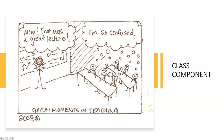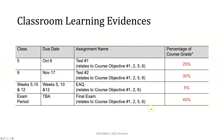The classroom learning evidences are three tests and EAQs. Test one will take place on class five covering class one to four content. Test two will take place in class nine covering class five to eight content. There will be EAQs on weeks five, ten, and twelve, relating to each of the tests, with about 15 to 20 questions each. The final exam will be a cumulative final exam taking place in the exam period.